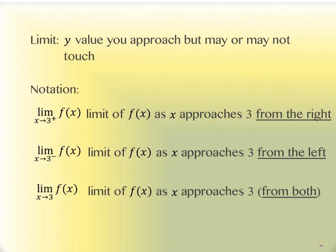There are three different notations that you need to be aware of. The bottom notation is the general one we see most often. This first notation is read: limit as x approaches 3, and the little plus sign means from the right. You can remember that because the right-hand side of the graph is the positive side. So if we've got that little plus, it means we're approaching from the right-hand side. Now if we're approaching from the right-hand side, it actually means we're moving left.